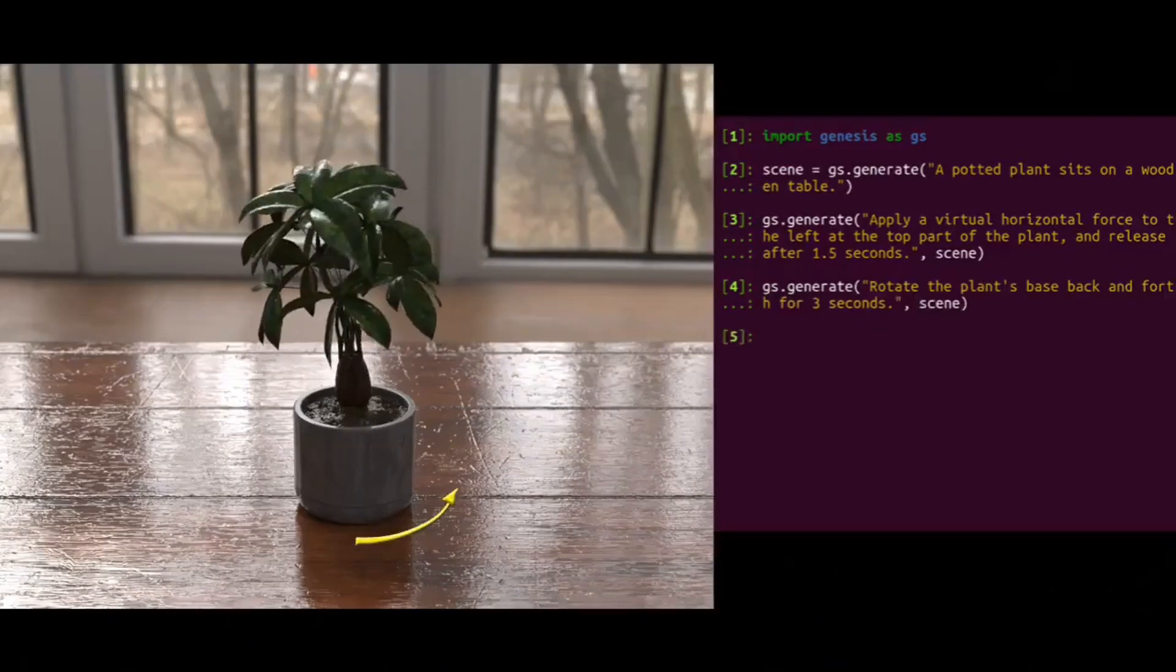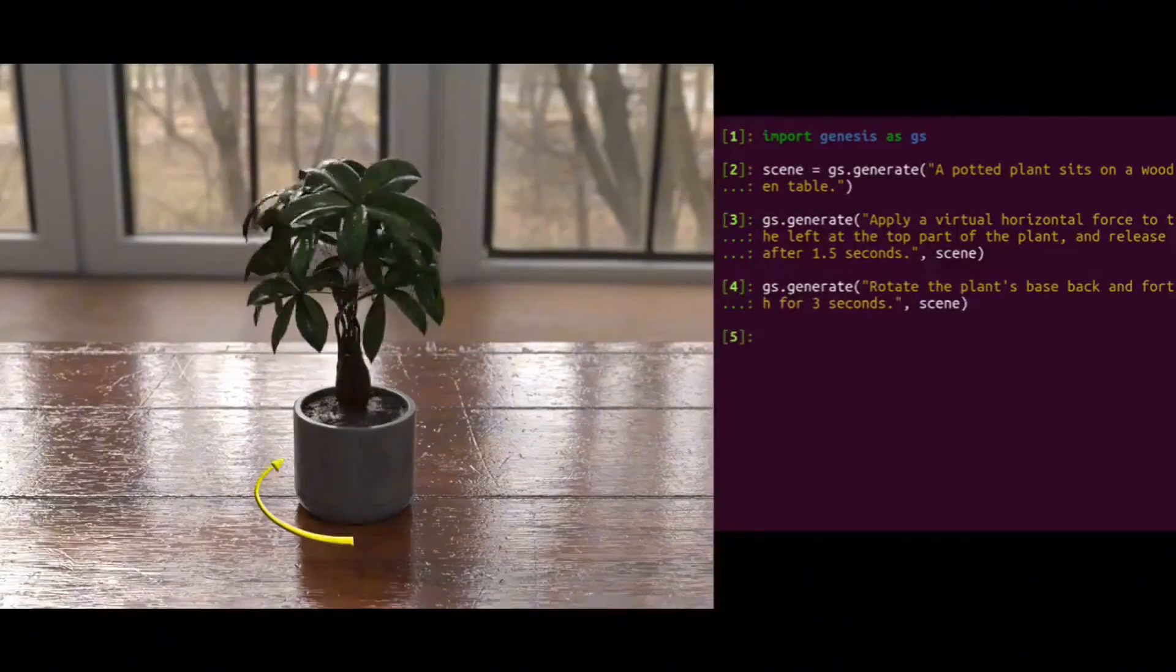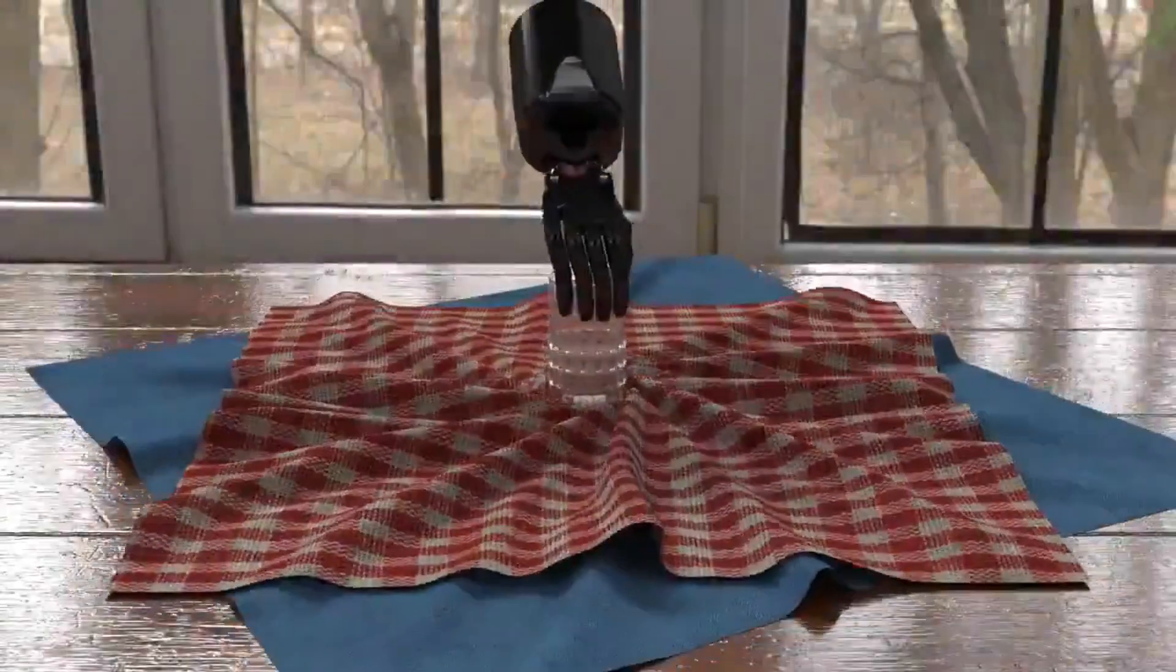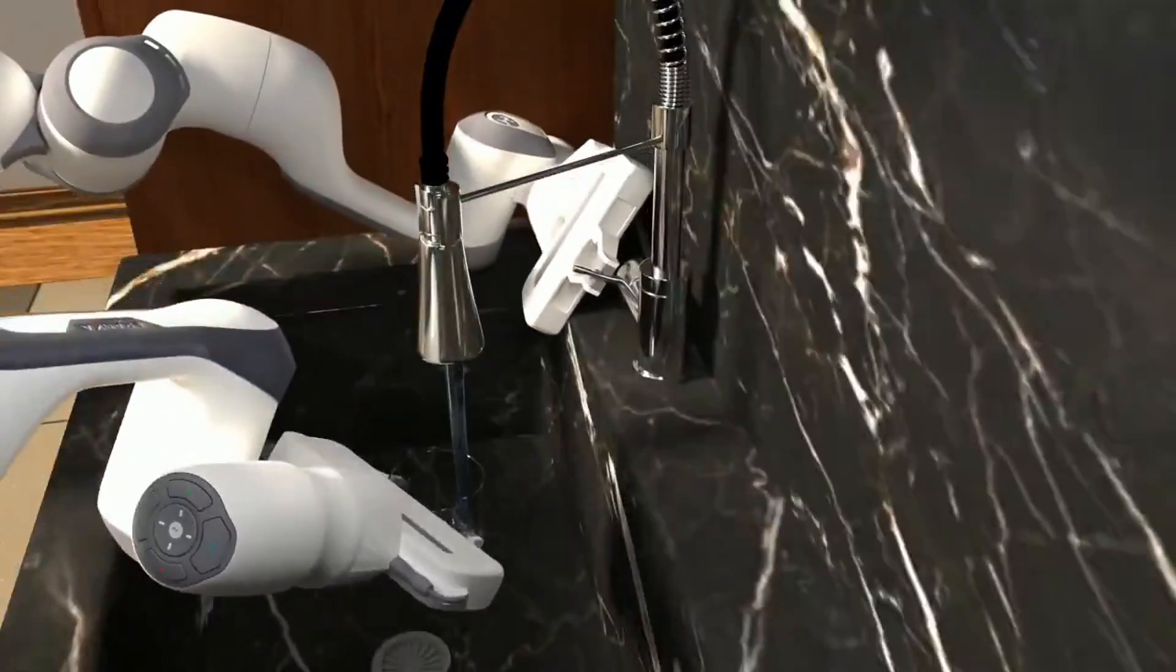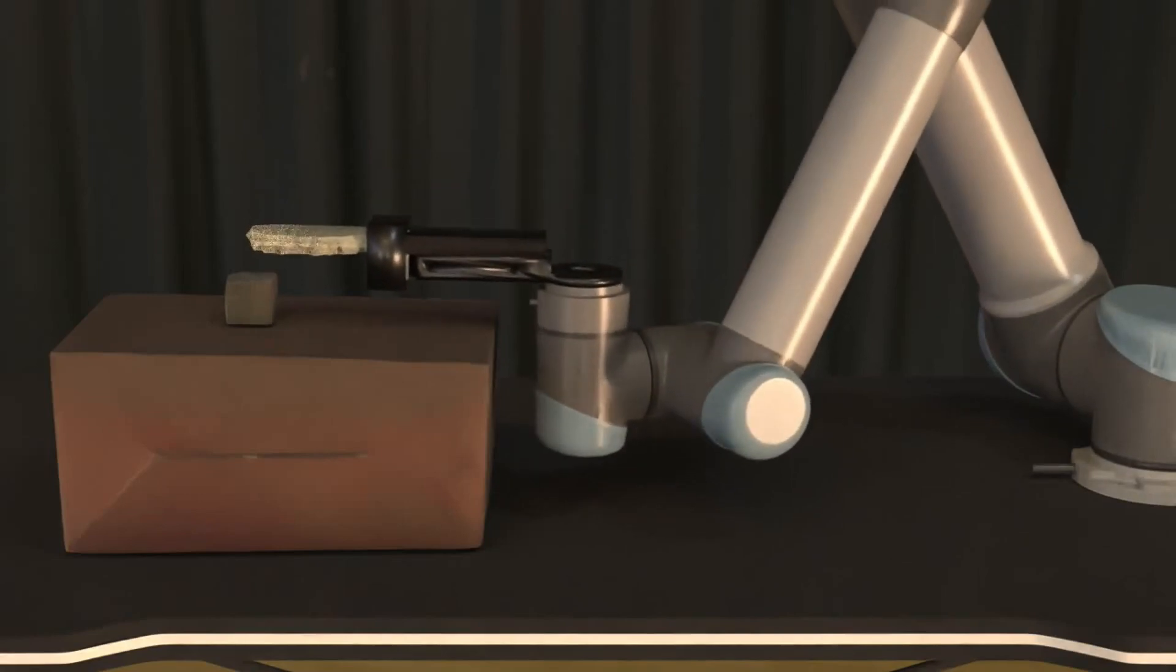Here are some of the real-world applications. Genesis isn't just about numbers, it's about possibilities. Here are some scenarios where Genesis shines. Robotics research: Train a robotic arm to sort objects or simulate drones in formation with precise control.